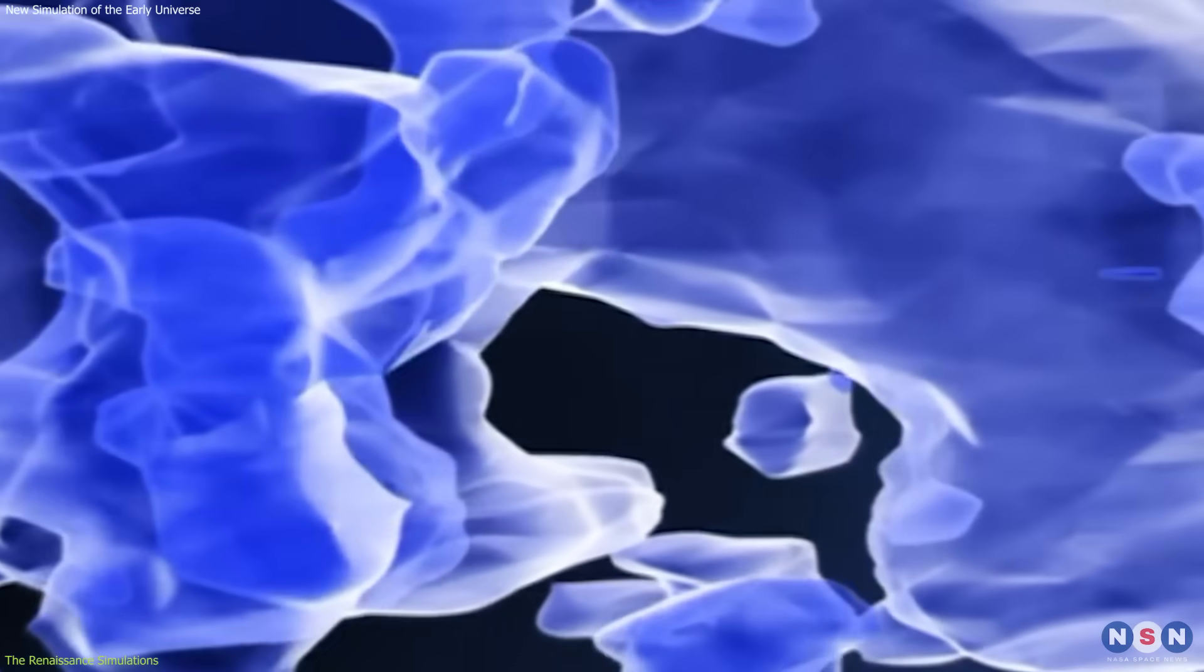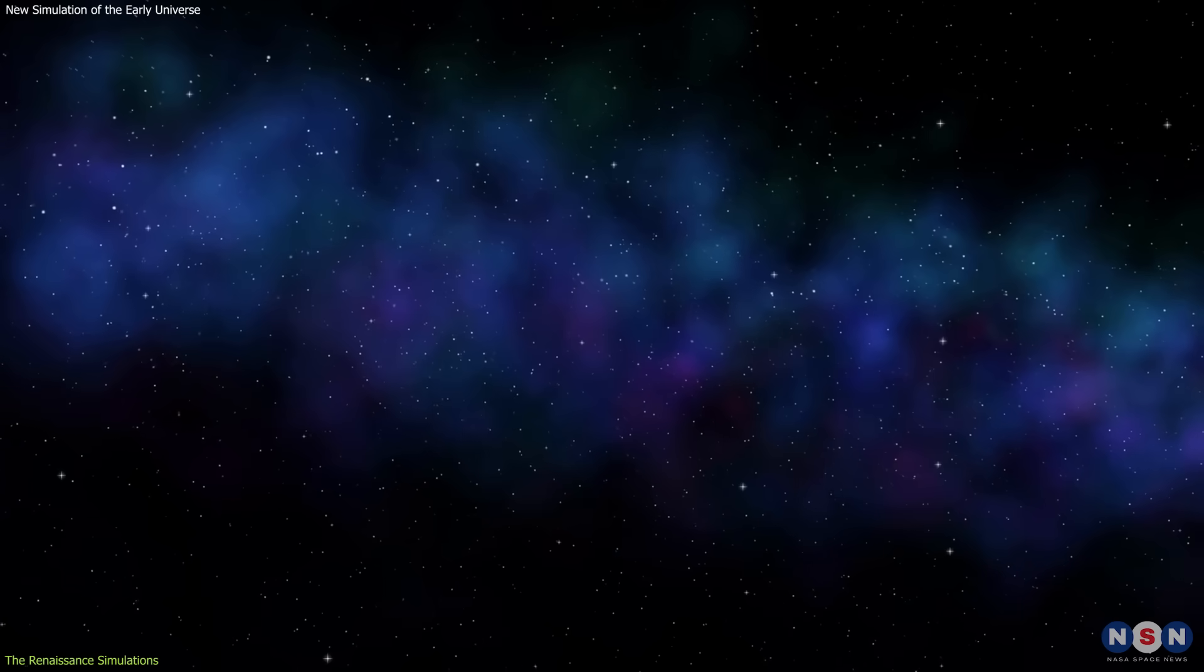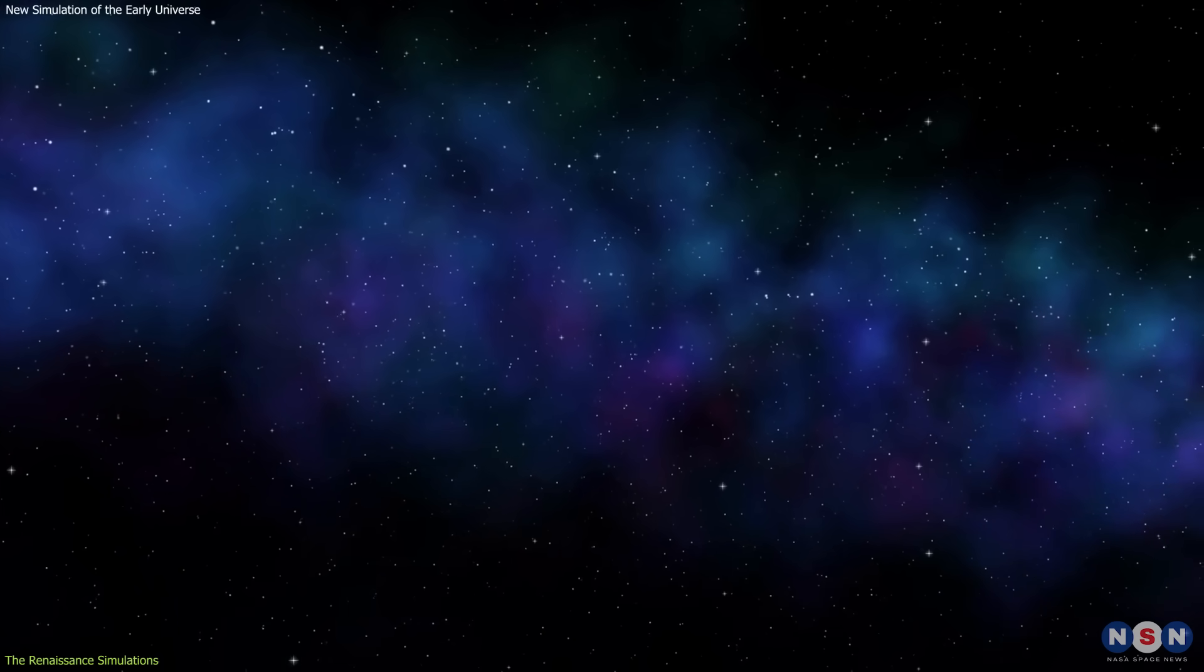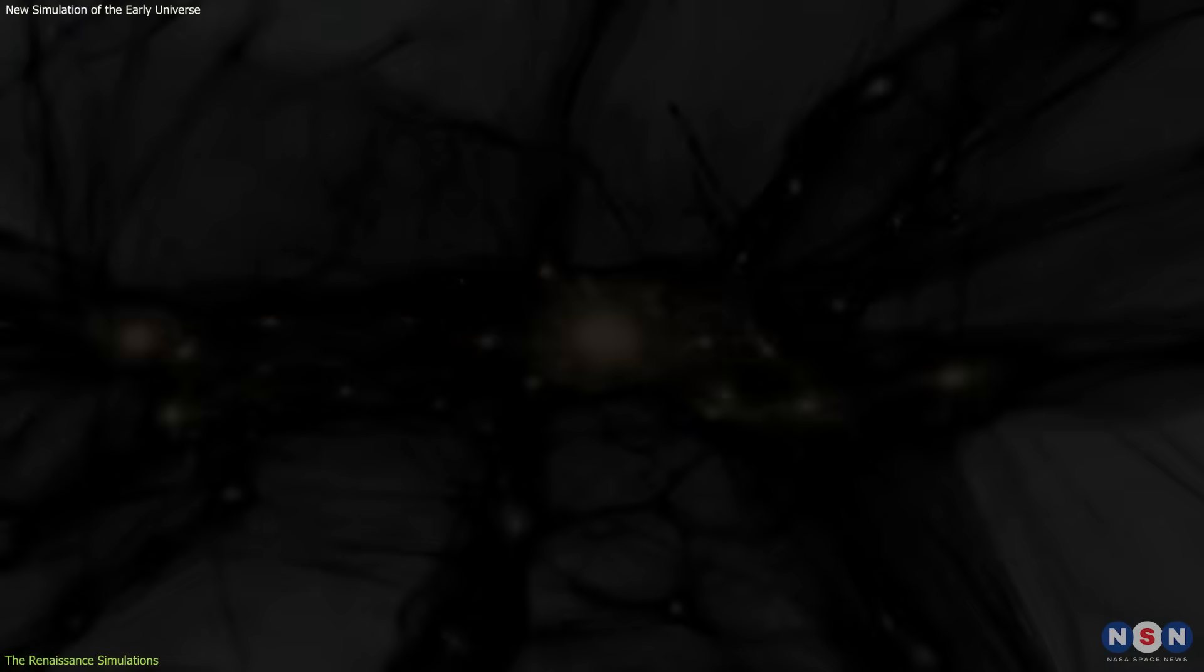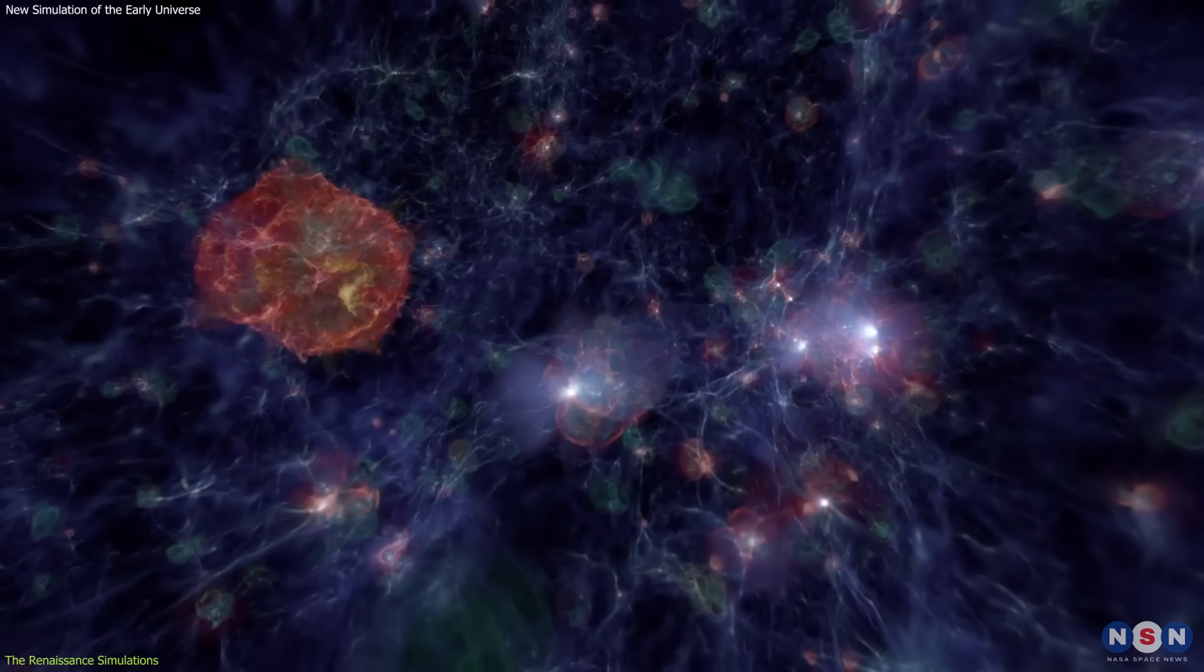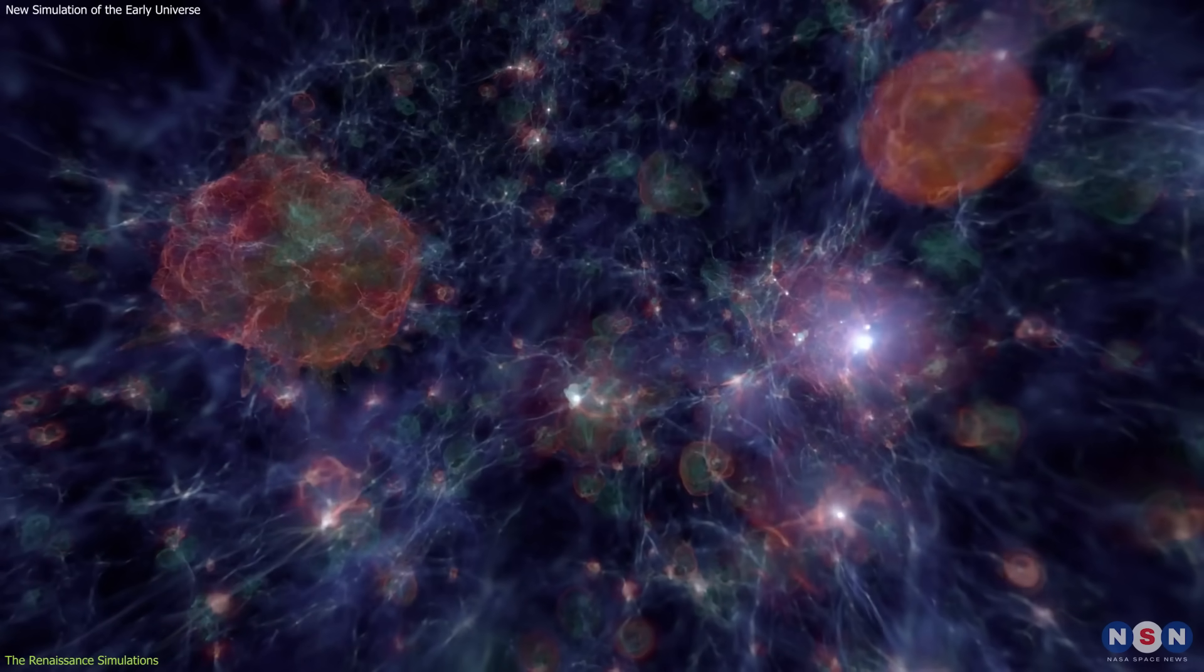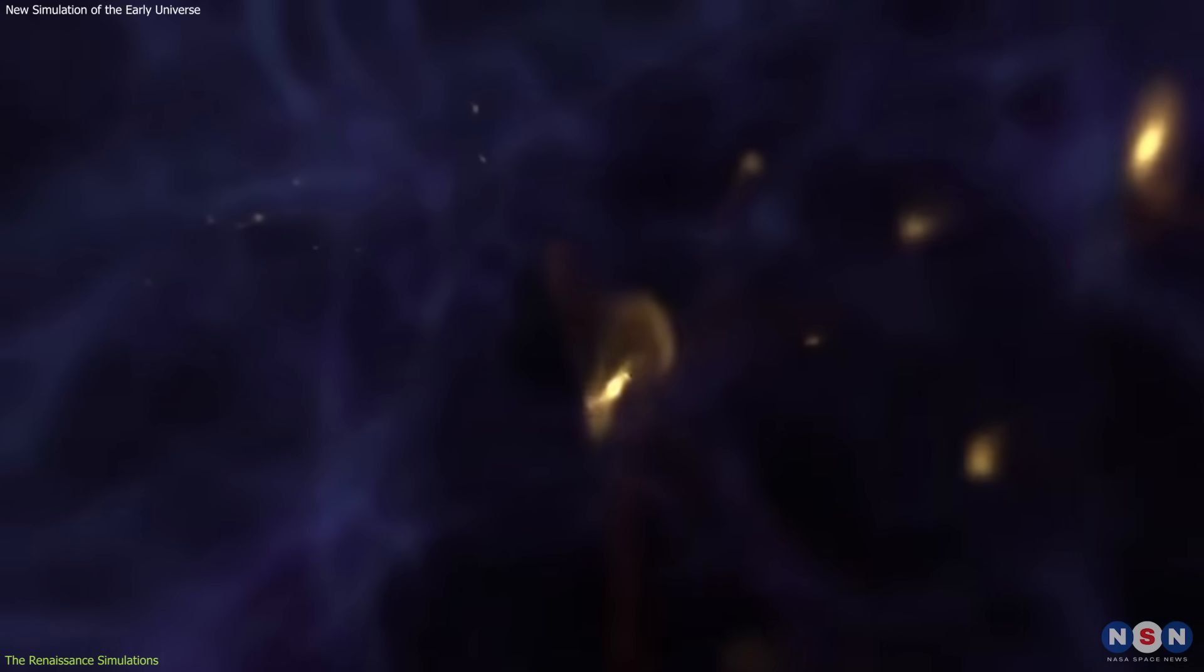Dark matter is a mysterious substance that makes up most of the matter in the universe, but does not interact with light or ordinary matter. It is believed that dark matter clumps act as seeds for galaxy formation, attracting gas and stars with their gravity. By resolving these small clumps, the Renaissance Simulations can capture the diversity and complexity of galaxy formation in the early universe.